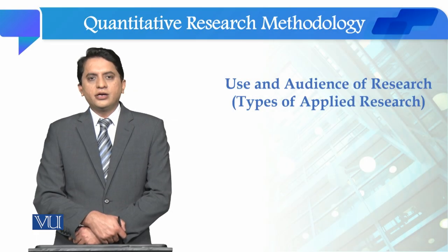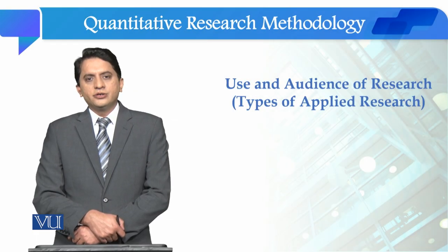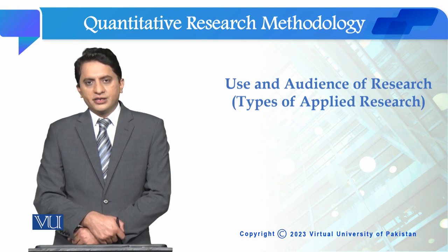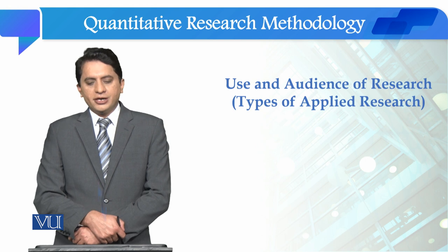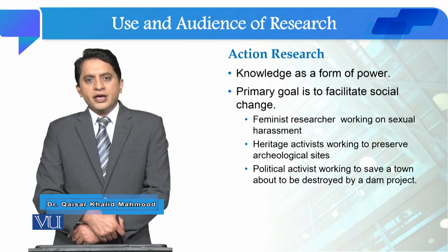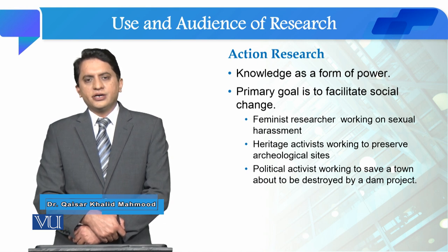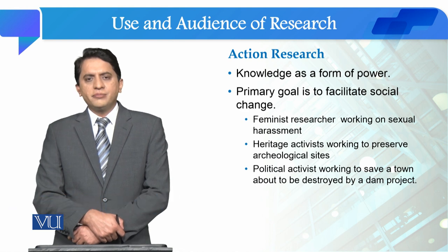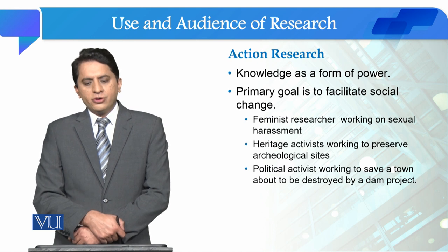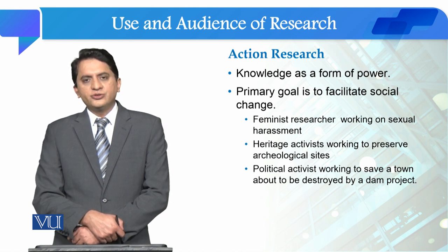Students, we have talked about the last topic of applied research — the type of action research. Now we will talk about the second type of applied research: action research. Action research is considered a type of research in which the respondent and researcher both become active in the process of research. Those who conduct action research believe that knowledge is a form of power, and the primary goal of research is to facilitate social change.